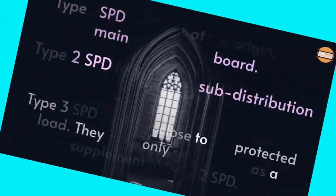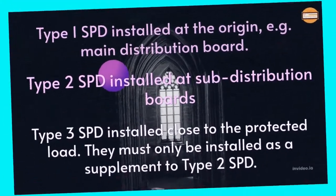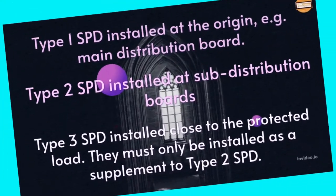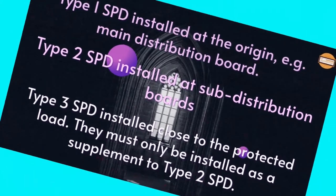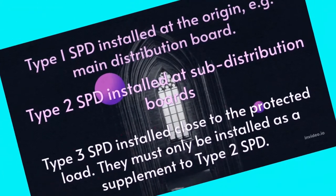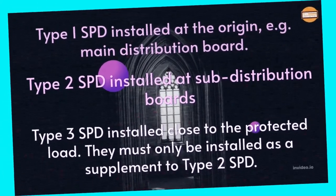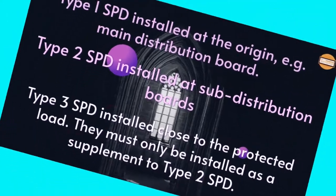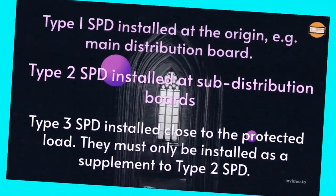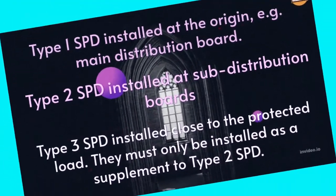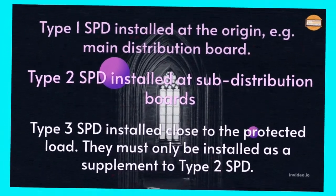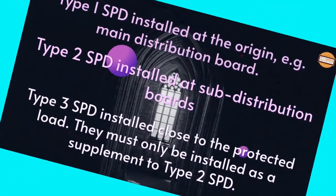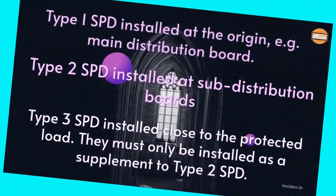Type 1 SPD is installed at the origin, that is, the main distribution board. Type 2 SPD is installed at sub distribution boards. Type 3 SPD is installed close to the protected load, and must only be installed as a supplement to a Type 2 SPD.